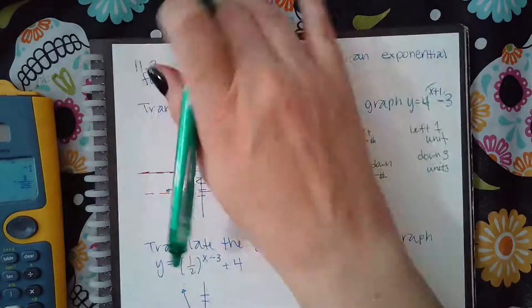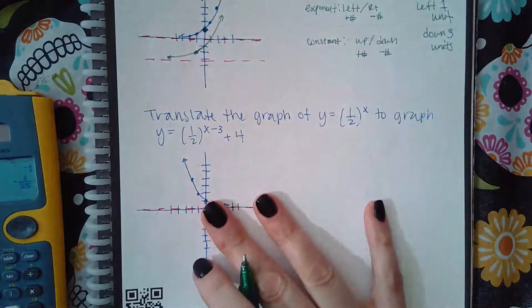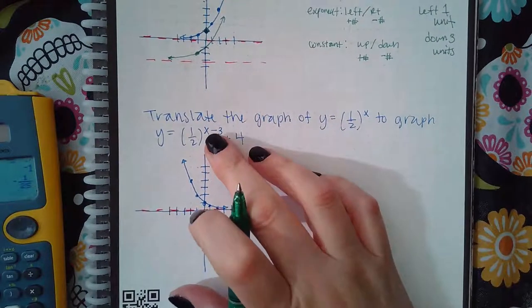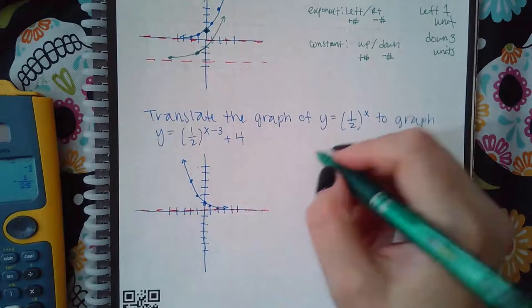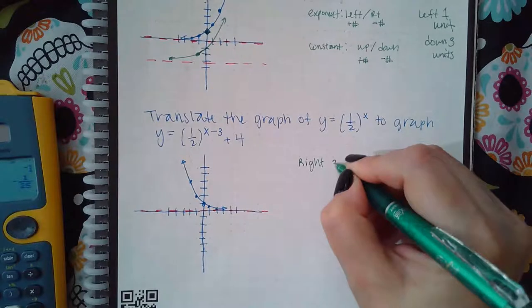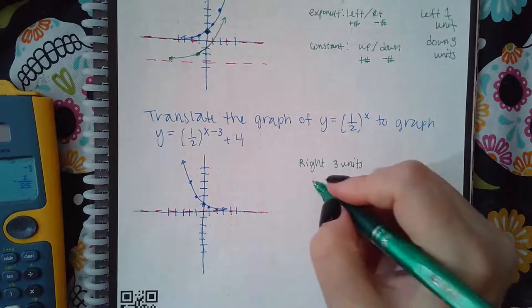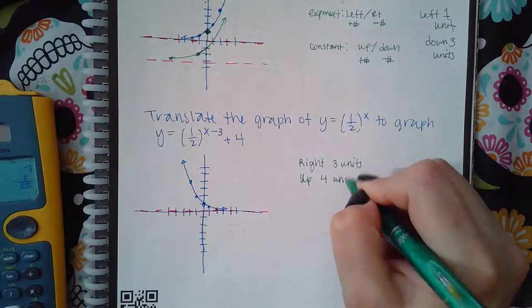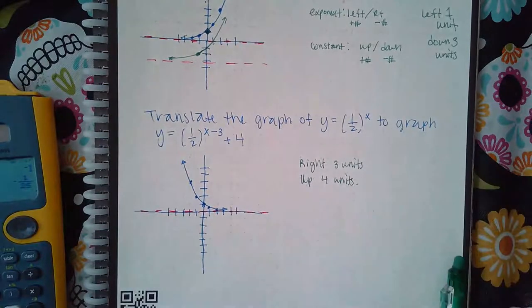Similarly for this one, that's the basic graph. The exponent they are minusing from, so that means I'm going to go to the right three units. And then the constant is plus, so that means I'm going to be going up four units.